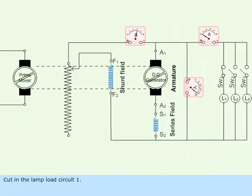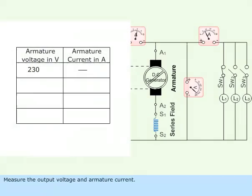Cut in the lamp load circuit 1. Measure the output voltage and armature current. Record the values in the table shown.